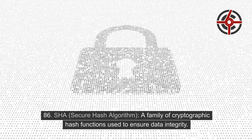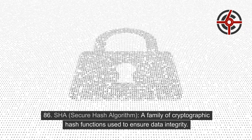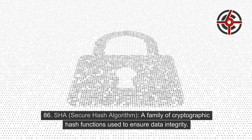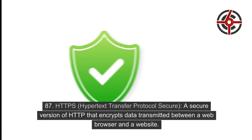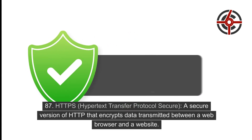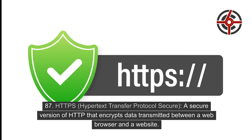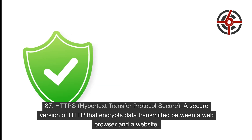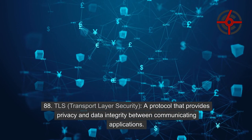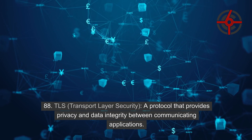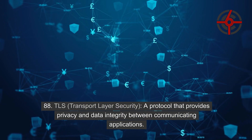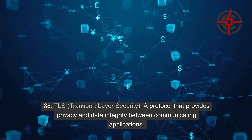86. SHA (Secure Hash Algorithm): A family of cryptographic hash functions used to ensure data integrity. 87. HTTPS (Hypertext Transfer Protocol Secure): A secure version of HTTP that encrypts data transmitted between a web browser and a website. 88. TLS (Transport Layer Security): A protocol that provides privacy and data integrity between communicating applications.